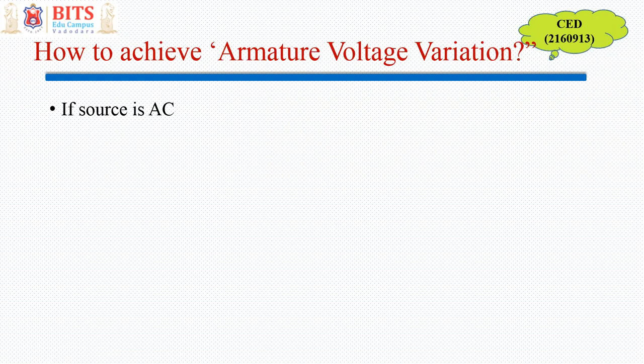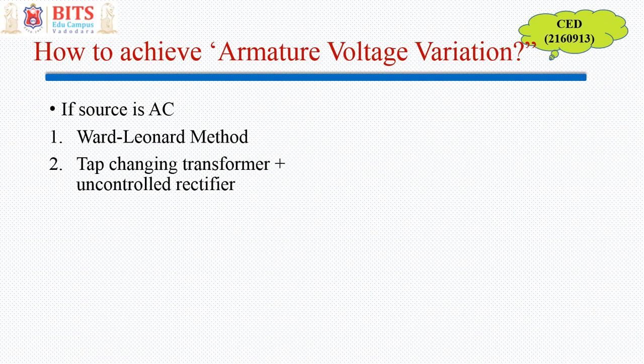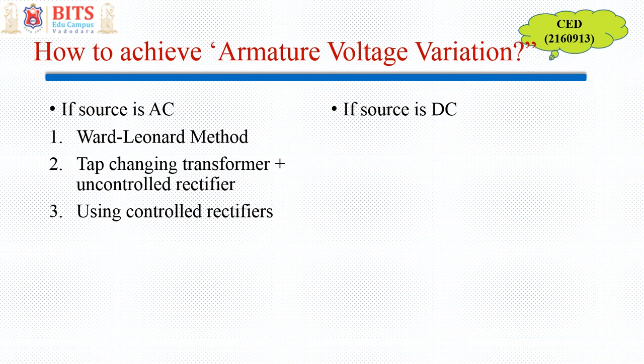The classification of different methods depends on the source. If the available supply for the motor is AC, then we have the following methods: one is the very old method known as the Ward-Leonard method; second is a very old method used in old locomotives — step-changing transformers with uncontrolled or diode rectifier; and third is the latest popular method using controlled rectifiers with SCRs, where we can control using the firing angle.